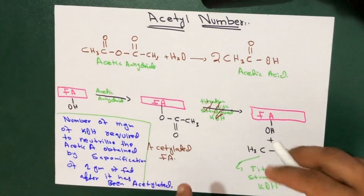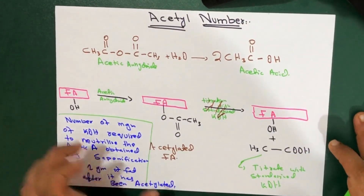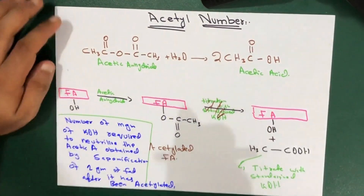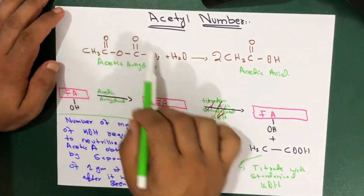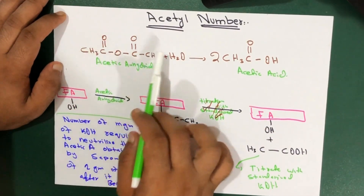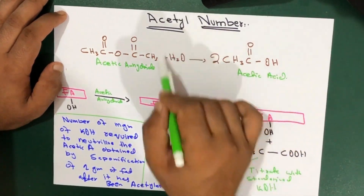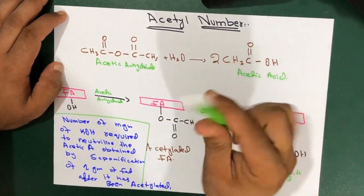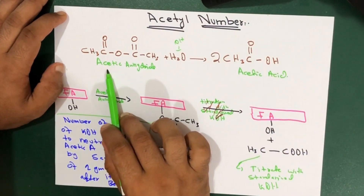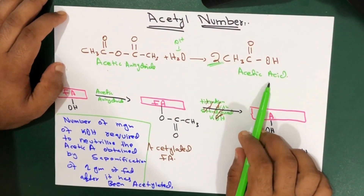The definition seems pretty complicated, so I will make it as easy as possible. This is the formula for Acetic Anhydride, which consists of four carbons. This is the Acetic Anhydride. This is a water molecule, which also contains an OH group. So when Acetic Anhydride reacts with water, it gives two Acetic Acid molecules.